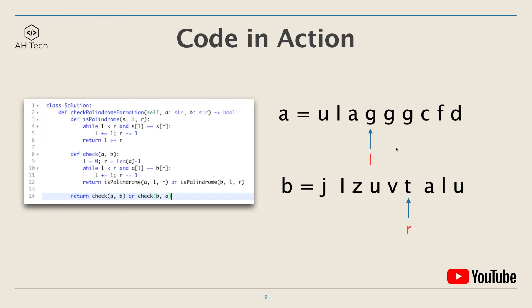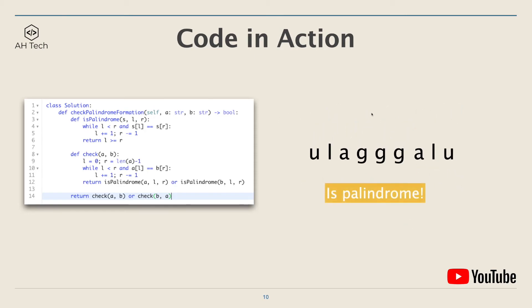Next we check if the middle part of A or the middle part of B is a palindrome. If one of them is a palindrome, we can cut that string and concatenate it to the suffix of the other string to make the combined string a palindrome. In this case, 'ggg' is a palindrome, so we concatenate the prefix of A to the suffix of B, and the concatenated string is a palindrome — so we return true.